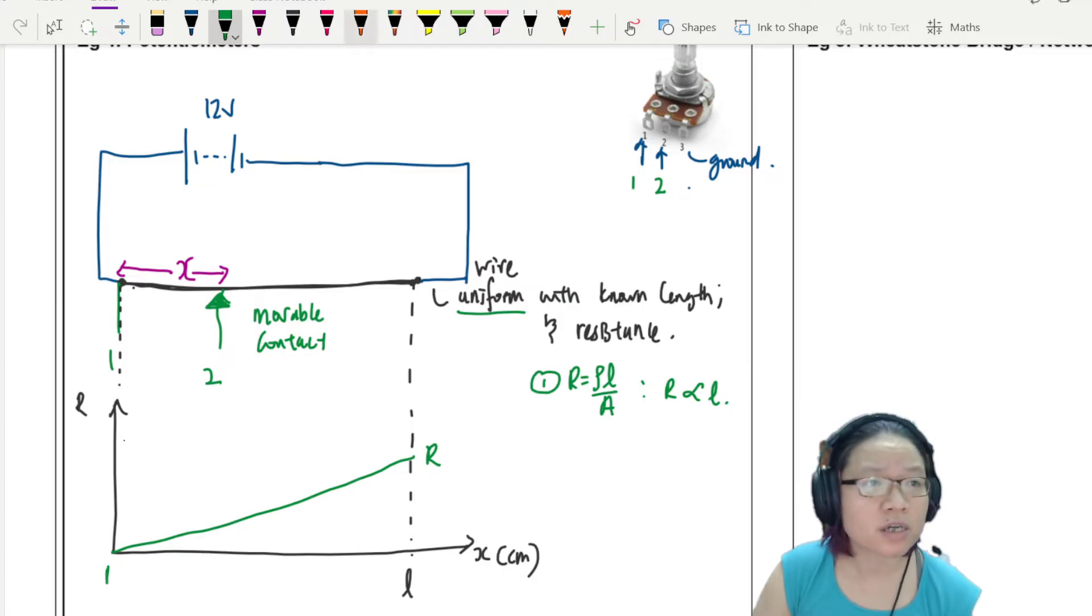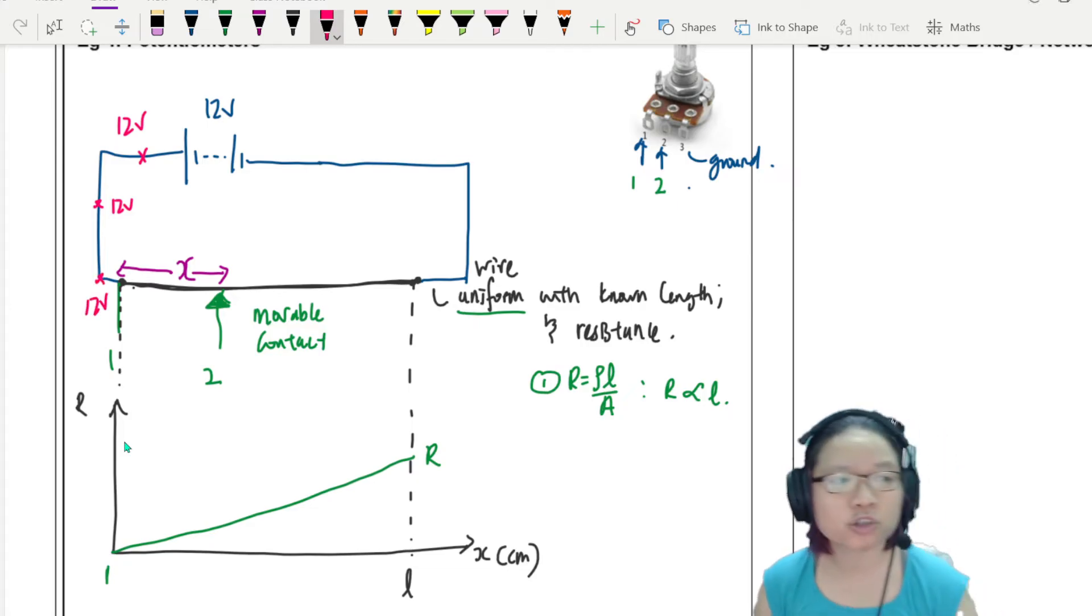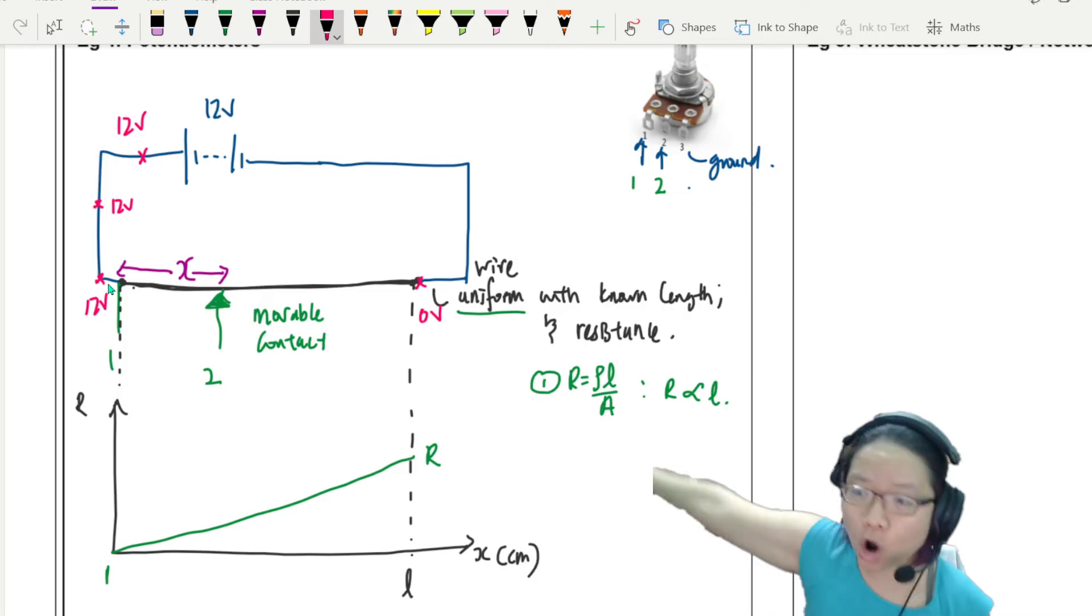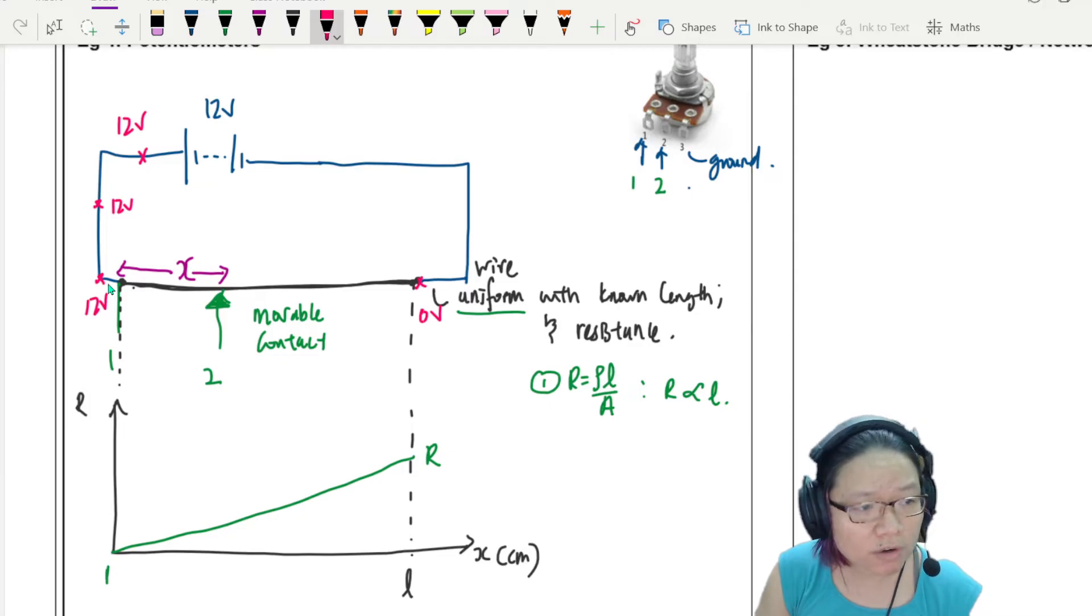Two graphs I want to draw. The first one I want to draw is resistance. So if I put the movable contact at position one, here is position one, this wire will have no resistance. So your graph is going to look like this. Because R is proportional to L. Because R is equal to rho L over A. So if it's uniform wire, then R is proportional to L. Number one.